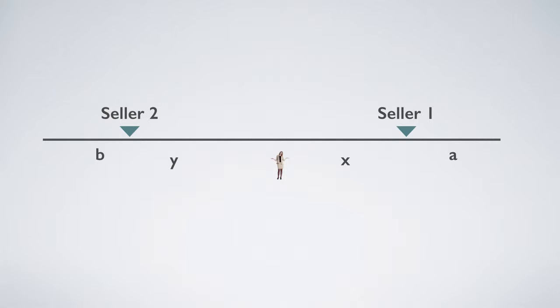This is a beach with a certain length and two sellers. A is the distance from the right end of the beach to the first seller. B is the distance from the left end of the beach to the second seller.